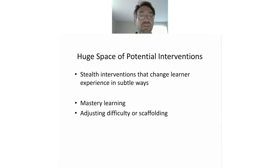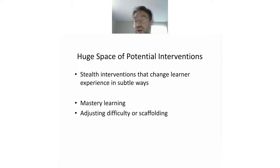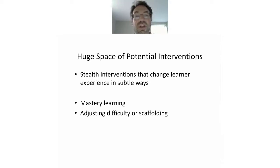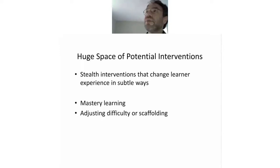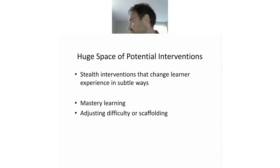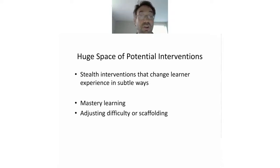Stealth interventions change learner experiences in subtle ways that the learner can't see. One example is mastery learning: you keep the student working on a topic until you think they know it. An even subtler one is adjusting the difficulty. If we see a learner becoming frustrated, it may be appropriate to dial down the difficulty for a couple exercises, get them feeling like they're making progress again, and then move them back to the harder stuff.